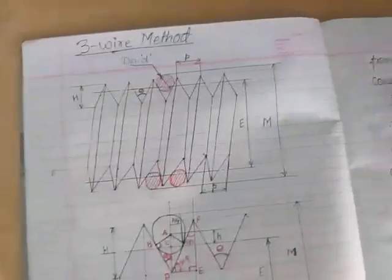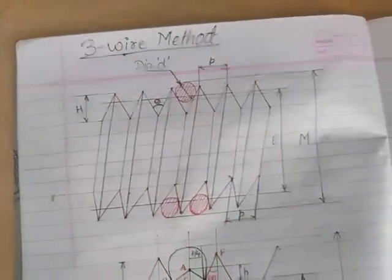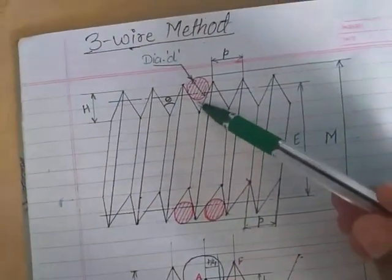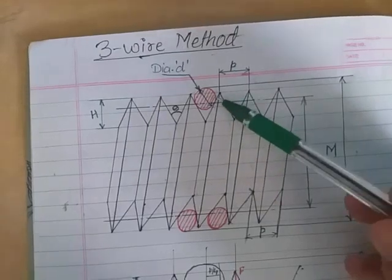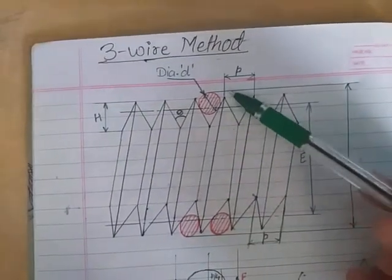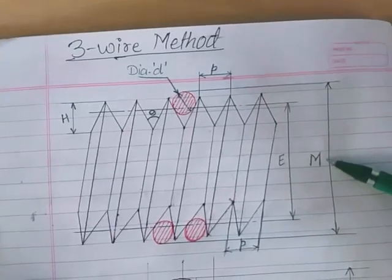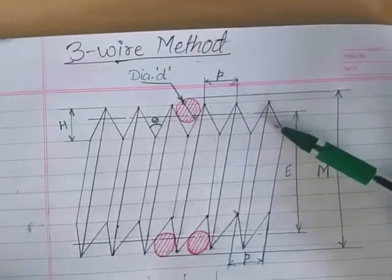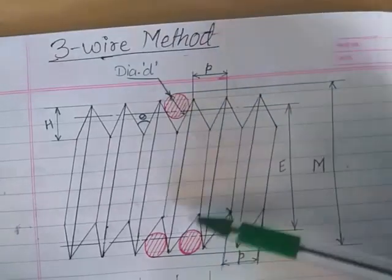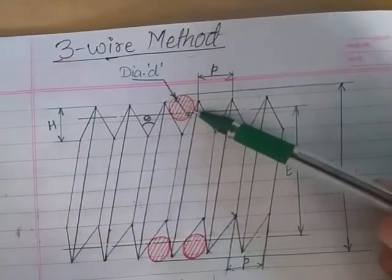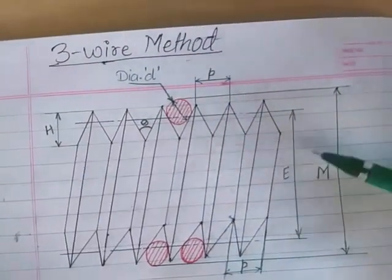The basic construction is like this: this is your screw thread profile, and over this screw thread profile we have inserted three wires — wire number one, wire number two, and wire number three. Two wires will be on one side and one wire will be on the other side. Over these wires we are going to measure the over-wire diameter, that is capital M. The effective diameter is located at the point of contact.